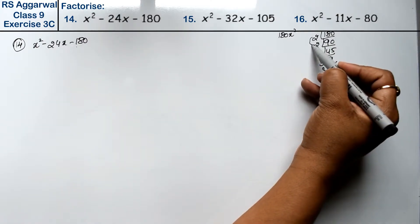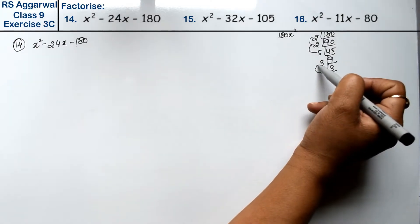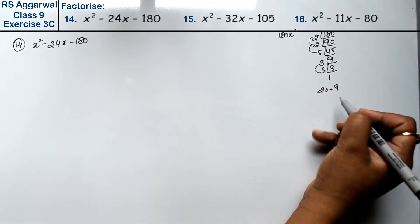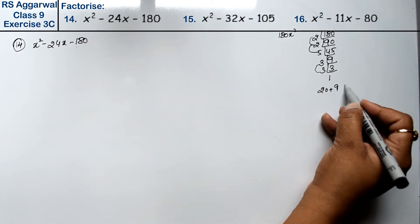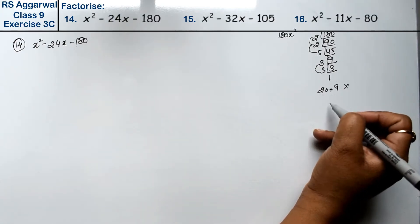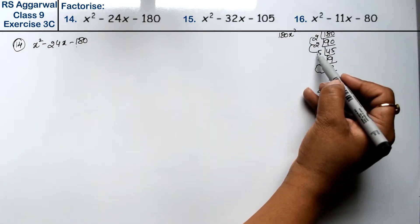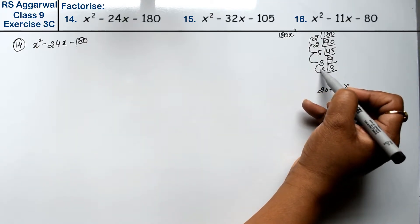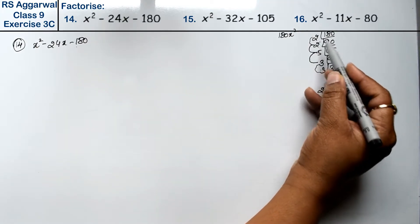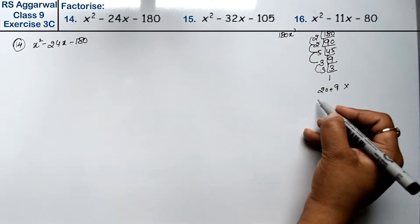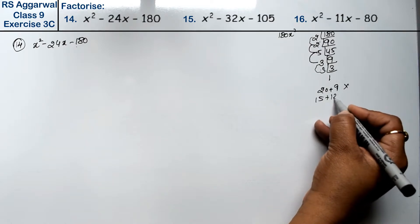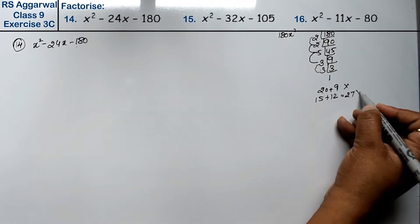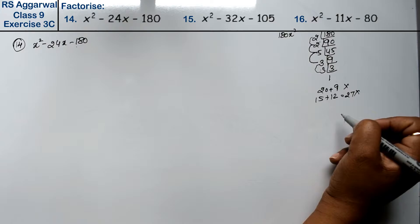Let's see: 2 twos are 4, 4 fives are 20 and 3 threes are 9. If we do 20 plus 9, then it will be 29 — that will not work. Then 5 threes are 15 and 3 fours are 12; 15 plus 12 is 27, so this will not work either.